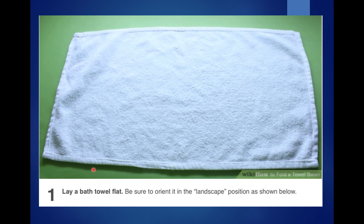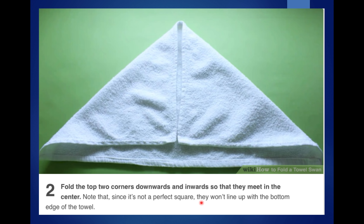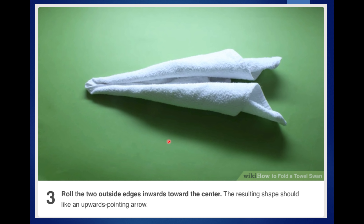So to make a swan, you're going to lay a bath towel or tea towel flat on the table or ground. Make sure it is in the landscape position. Once you've done that, you're going to fold the top two corners downwards and inwards so they meet at the centre, just here. Your next step is you are going to roll the edges inward towards the centre. It should look a little bit like an arrow.